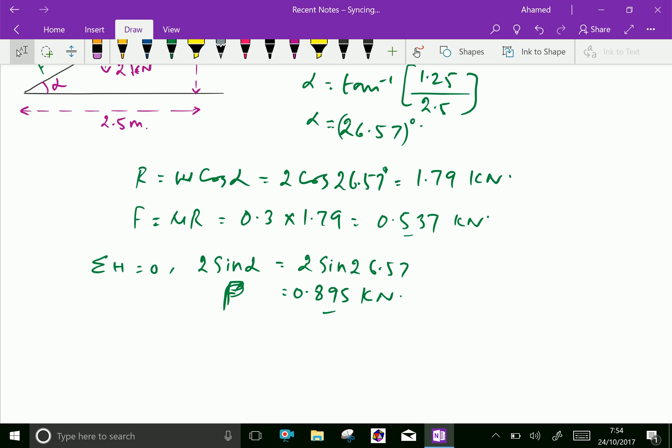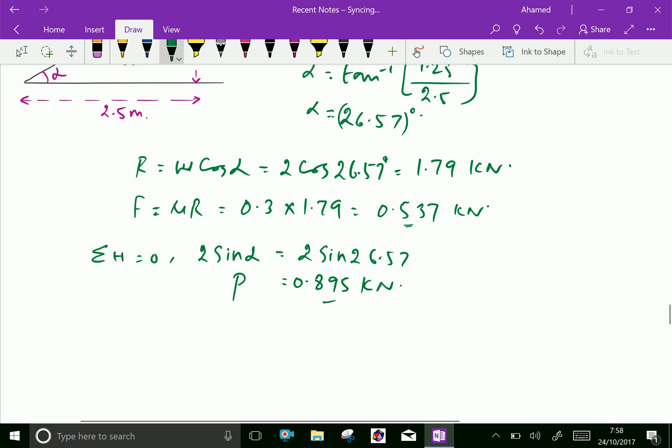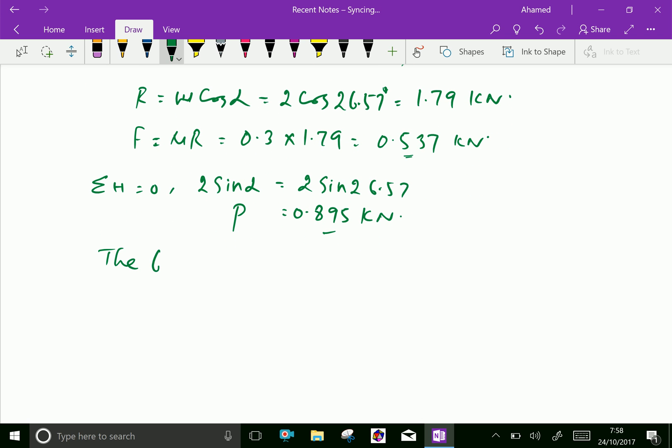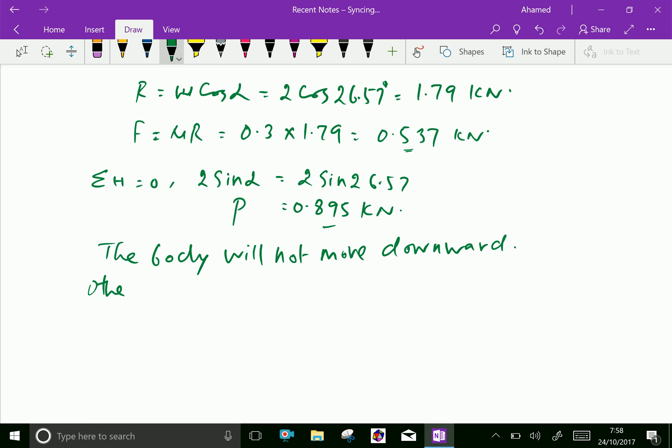Therefore, the body, the force P is greater than the force of friction downward, that is 0.537. Therefore, the body will not move downward, otherwise means, which means we have to push the body downward.